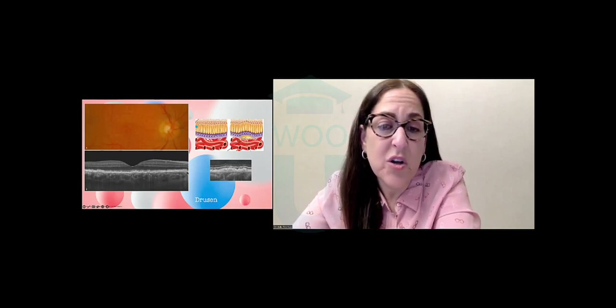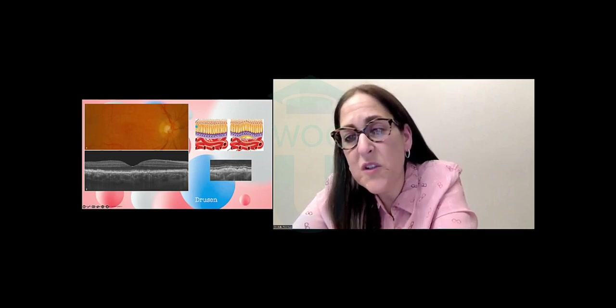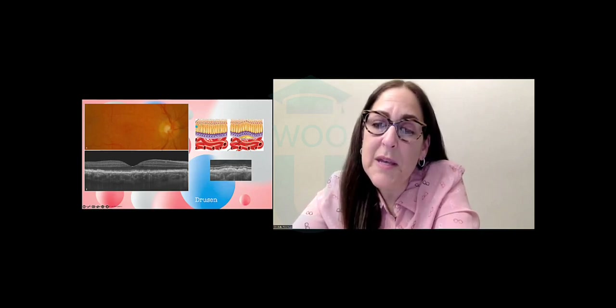Here you can see this area here is my drusen, living below the RPE but above Bruch's membrane — all these little bumps are drusen. Here's a more magnified view: up here is my photoreceptor integrity line, this is my RPE, and the abnormality is living below the RPE but above Bruch's membrane. This is another example of a patient with medium to large soft drusen — you can trace the RPE and see that these elevations are living below the RPE and above Bruch's membrane — these are soft confluent drusen.